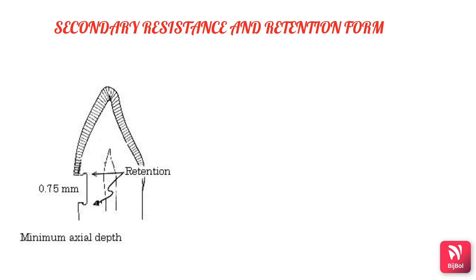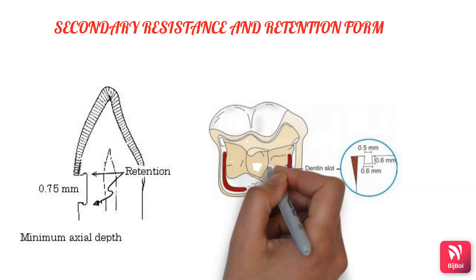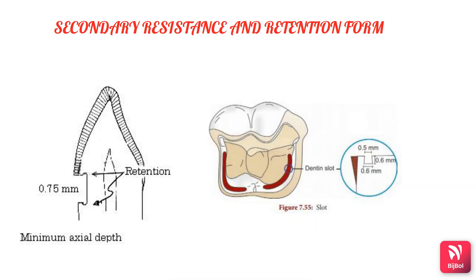Retention grooves are placed using the 169L taper fissure burr, with sufficient crown depth of 0.75 mm into the dentine. Next are slots — these are retention grooves in a horizontal plane, placed in the gingival floor just beyond the DEJ. The depth is 0.6 mm into the dentine and the width is 0.5 mm.